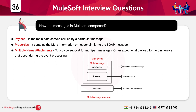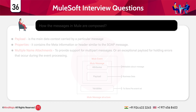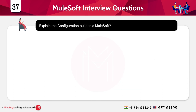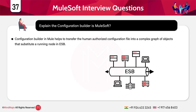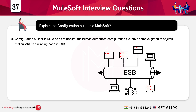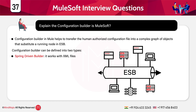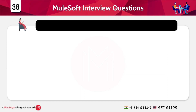Explain the configuration builder in Mule. The configuration builder in Mule helps transfer a human-authored configuration file into a complex graph of objects that substitutes a running node in the ESB. The configuration builder can be of two types: first, the Spring-driven builder, which works with XML files; and second, the script builder, which accepts scripting language files.